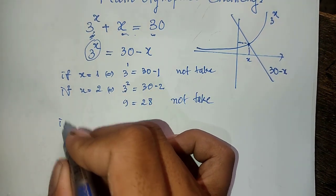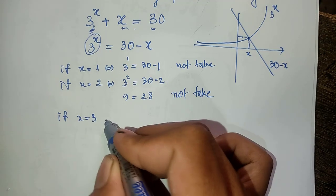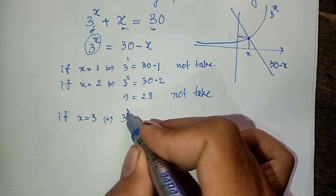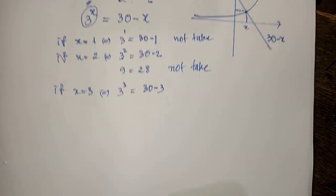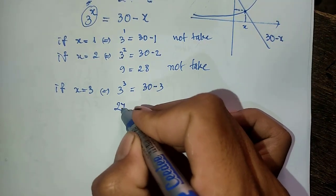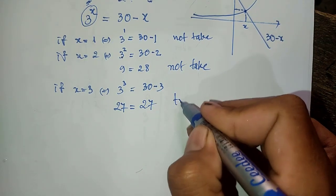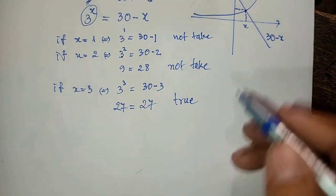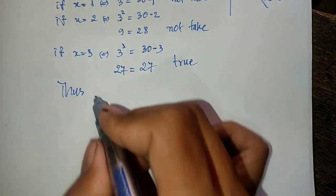And now if x equals 3, we get 3^3 which equals 27, and 30 minus 3 equals 27. 27 equals 27, okay, true. So now we have the value x equals 3 is our solution.